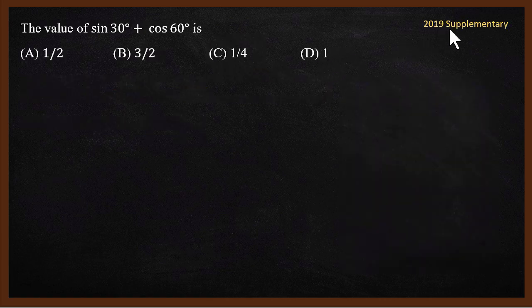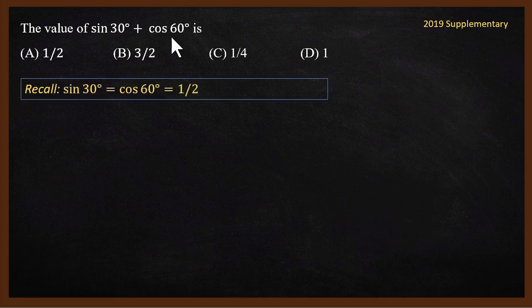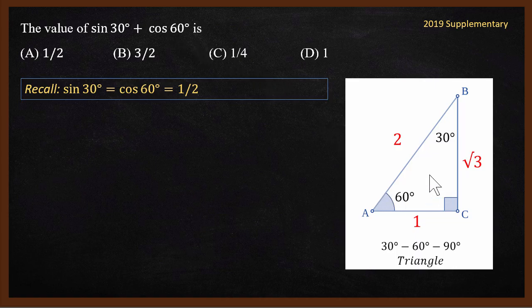The next question is from the 2019 supplementary paper. Find the value of sin 30° plus cos 60°. Using the same 30-60-90 triangle: sin 30° equals opposite over hypotenuse, which is 1 by 2. cos 60° equals adjacent over hypotenuse, which is also 1 by 2. So sin 30° and cos 60° are both half.